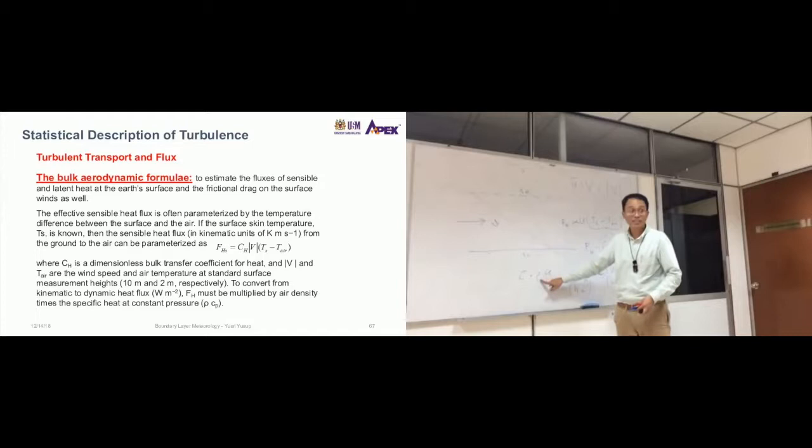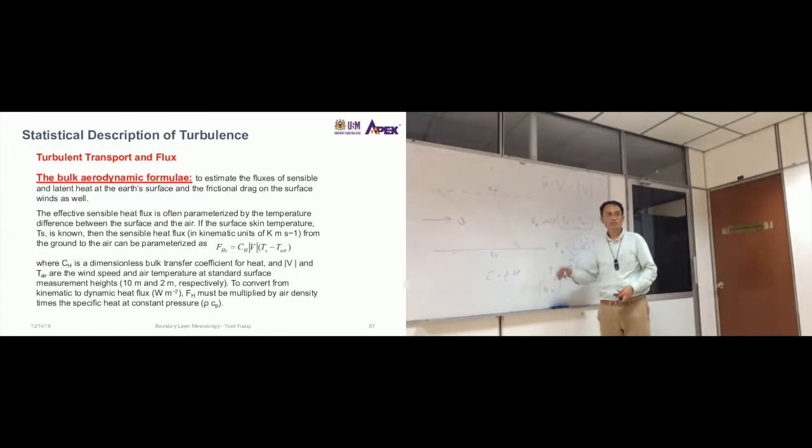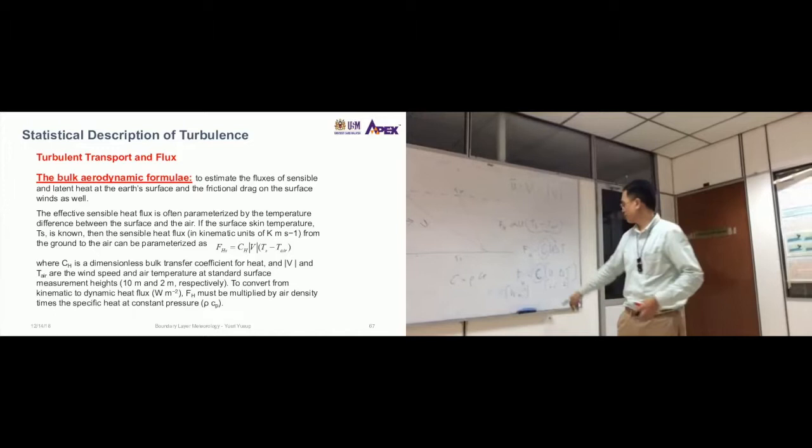So this C here is different depending on what you want to calculate. So if this is for sensible heat flux, this C here is rho Cp. So rho is the density of air, Cp is the heat capacity of air. So from here, you can guess that the units would change this unit to this unit. But of course, for specific humidity, for other parameters, it would be different constants.